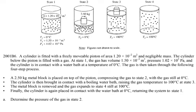This is the 2001 AP Physics B exam question. A cylinder is fitted with a freely movable piston of area 1.2 times 10 to the negative 2 meters squared and negligible mass. The cylinder below the piston is filled with gas.